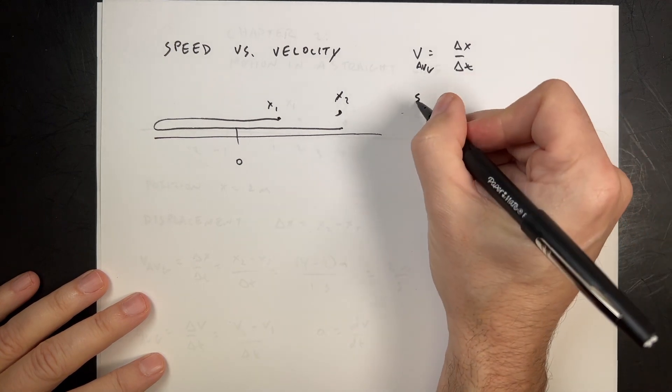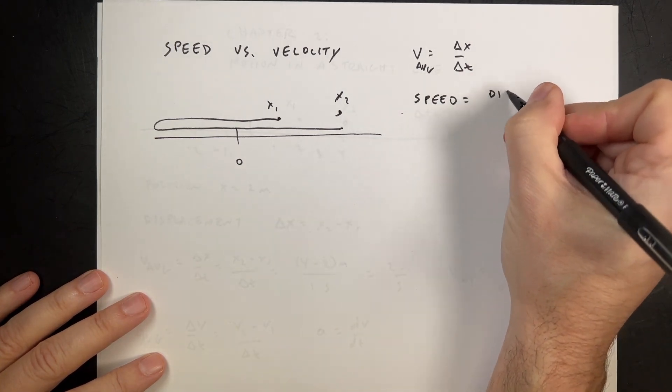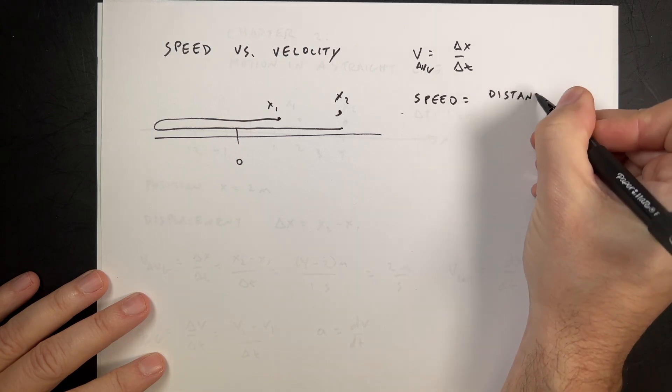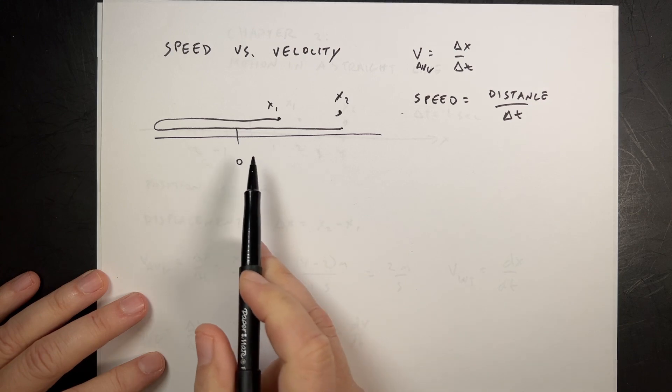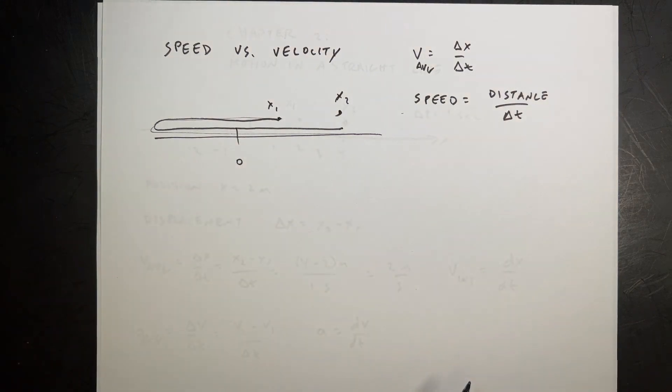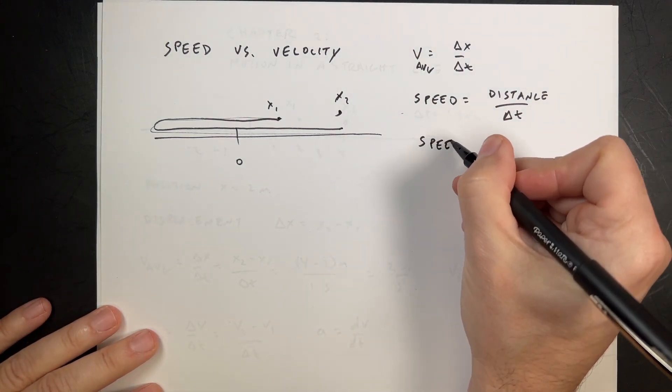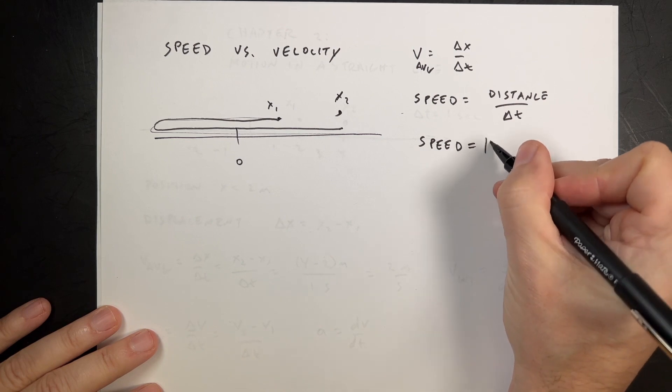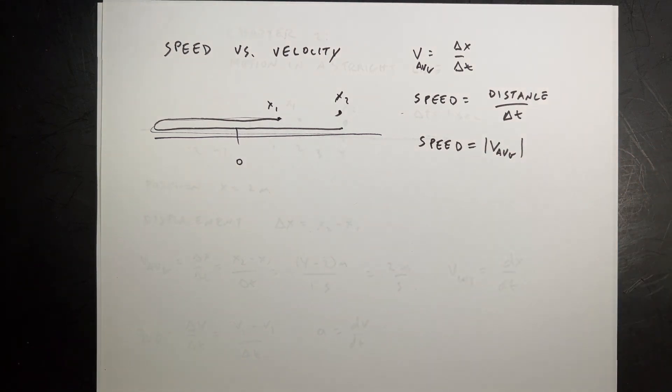But the speed, and there's more than one definition of this, speed is the distance traveled over the time interval. So that would include all this distance and all that distance. So these two would give you different numbers. Some people will write that the speed is just the absolute value of the average velocity, and that's not actually true. I mean, you could use it in some cases, but that's not generally correct.